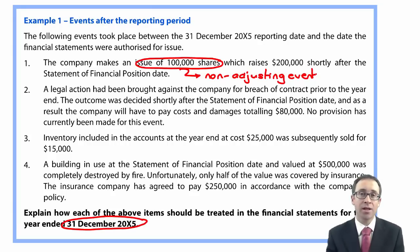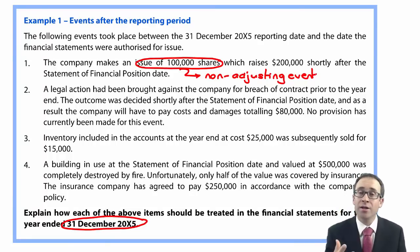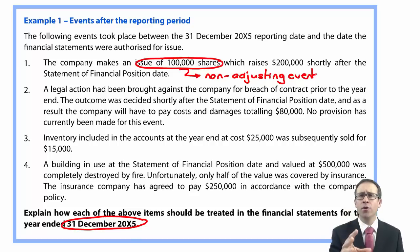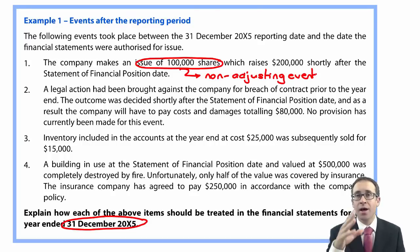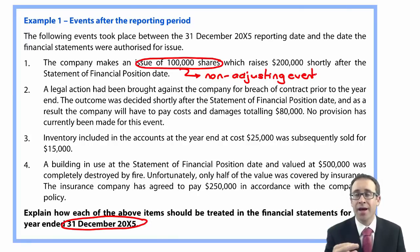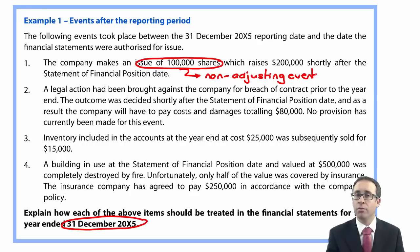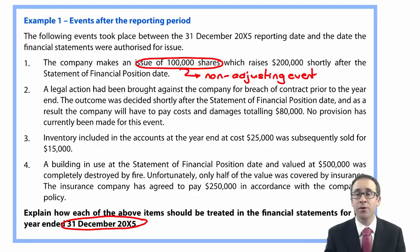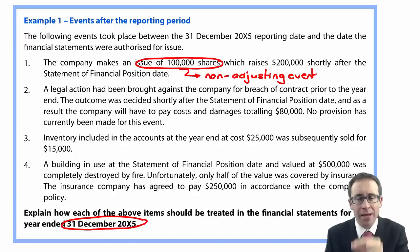$200,000 is quite significant, so it will be disclosed. A picky point in the standard is that even though you don't record the issue of shares by debiting bank, crediting share capital and share premium, you do actually update your earnings per share figure at year end. You would incorporate those 100,000 shares as if in issue at the reporting date — even though they're not — to give the user a more faithful representation of EPS inclusive of that share issue. So it's a non-adjusting event for everything in the financial statements, but you do disclose it as material and update the EPS disclosure.